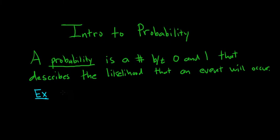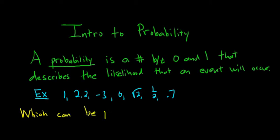So as an example, here's a bunch of numbers. So 1, 2.2, negative 3, 0, square root of 2, 1 half, 0.7. And the question would be, which can be probabilities? So which can be probabilities? Probabilities.